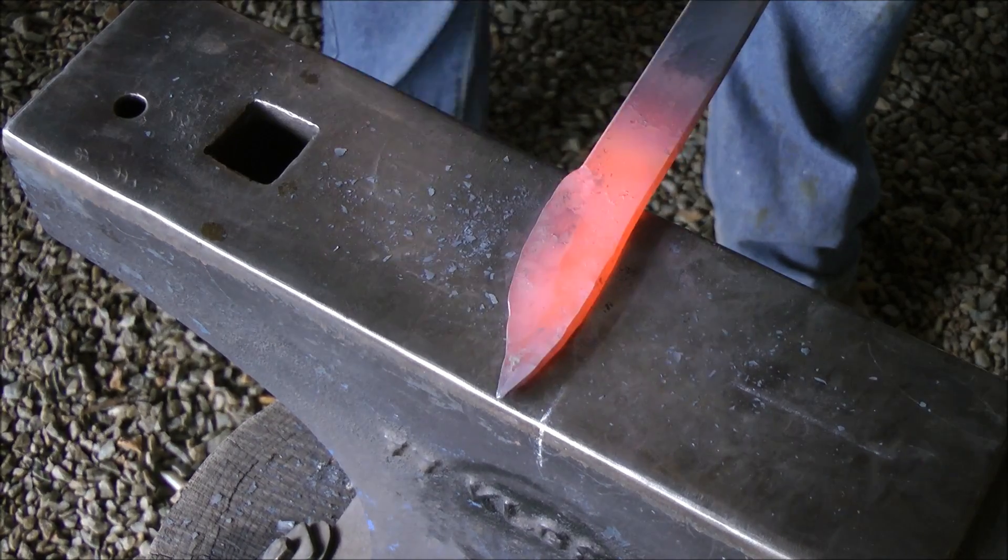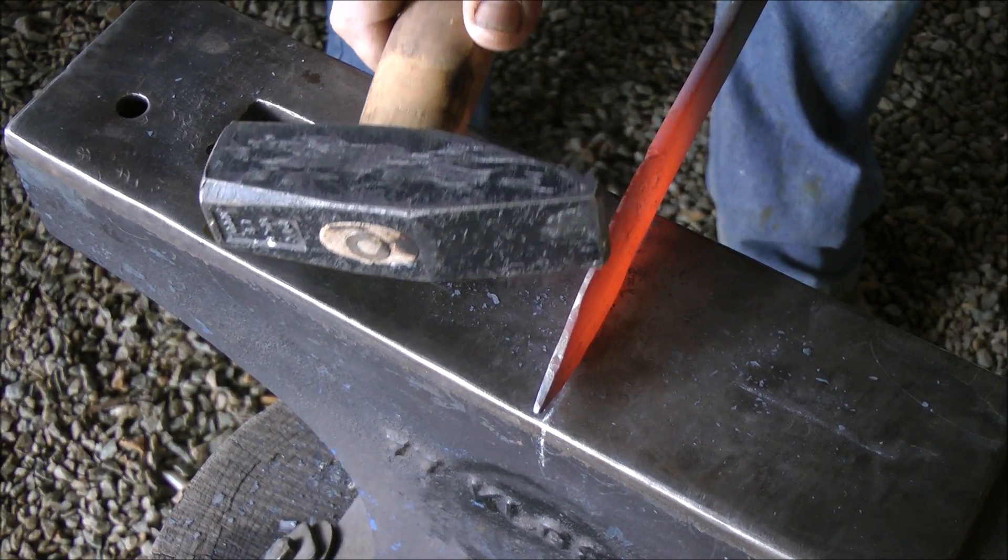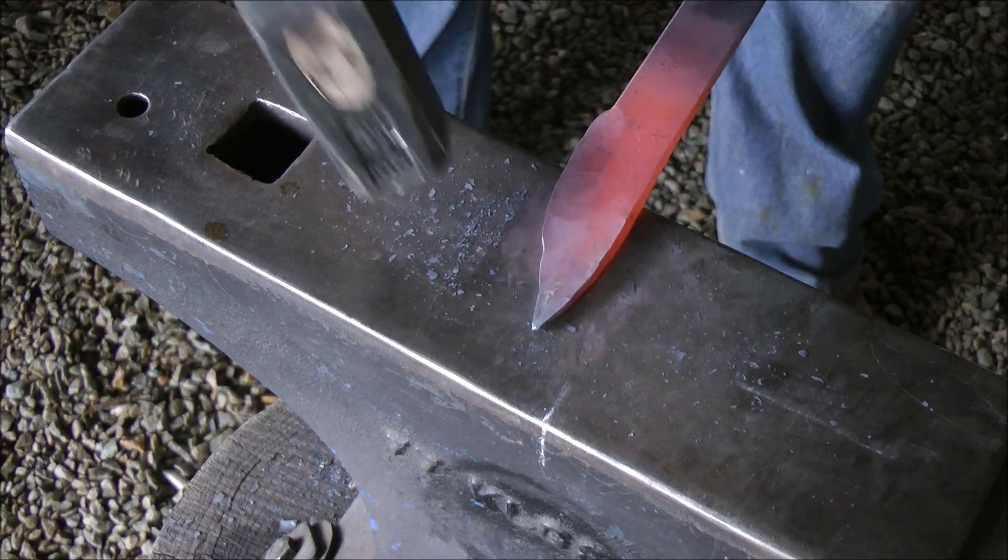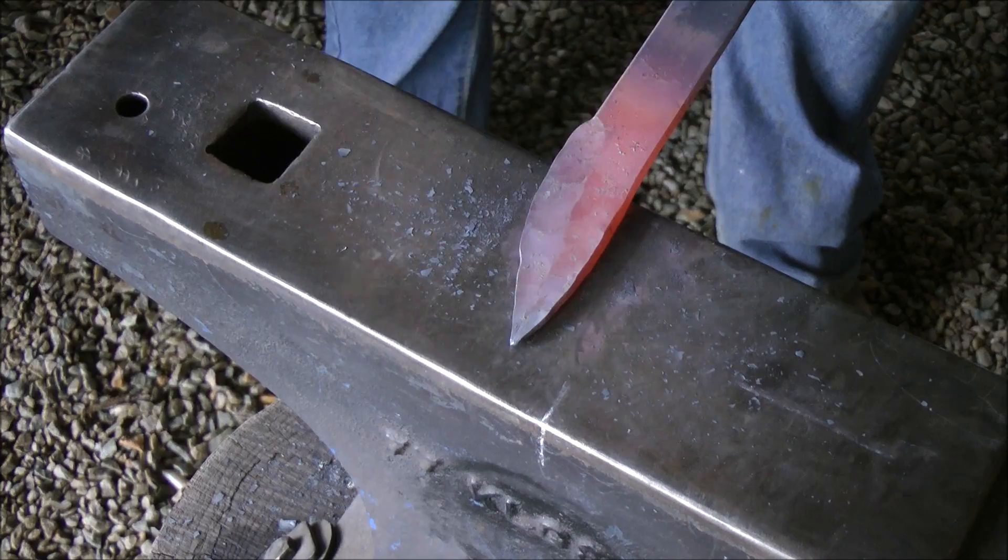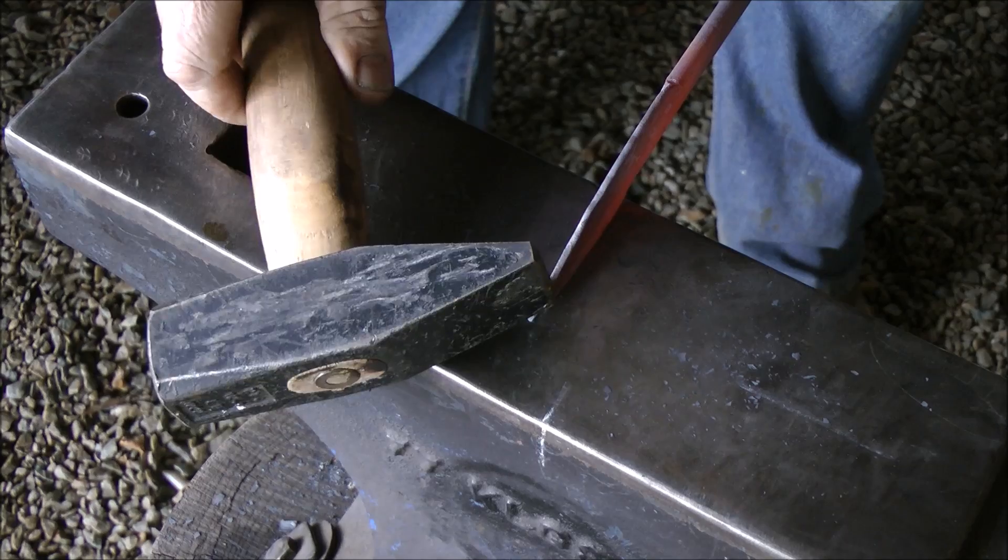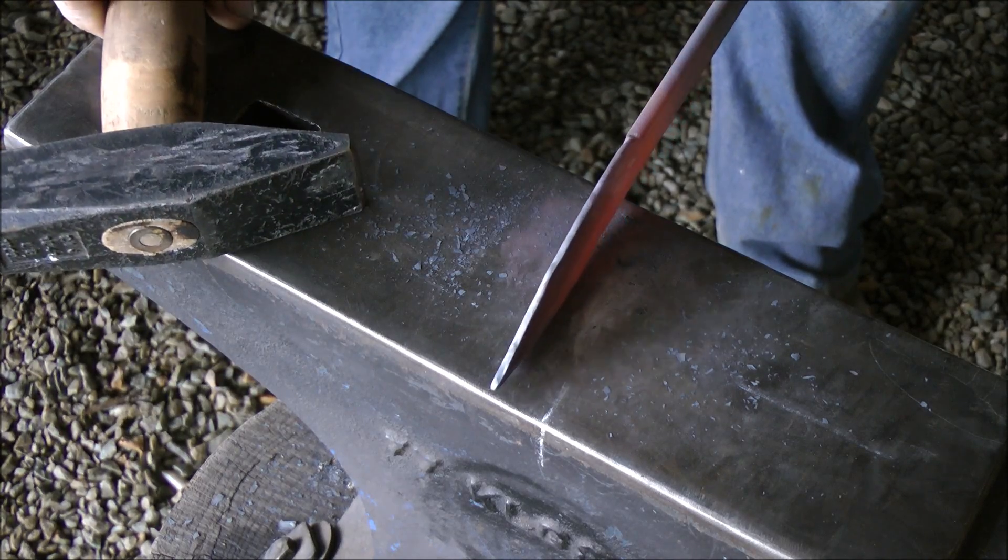Basically what we're going to do is start here and work that edge thickness all the way to the tip. As I get to the tip, I'm hammering a bit softer, as the metal is already thinner. Edge thickness is about the same all the way through.